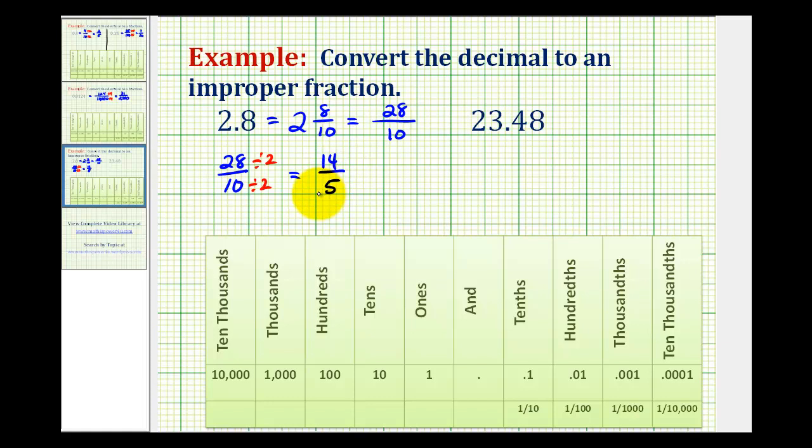Now there is a shortcut, or another method for converting a decimal to an improper fraction. We can write the decimal number in the numerator without the decimal point, that would be 28. Then the denominator is always 1, followed by the same number of zeros as there are digits to the right of the decimal point. Notice there's one digit to the right of the decimal point, and we have 1 followed by 1 zero.